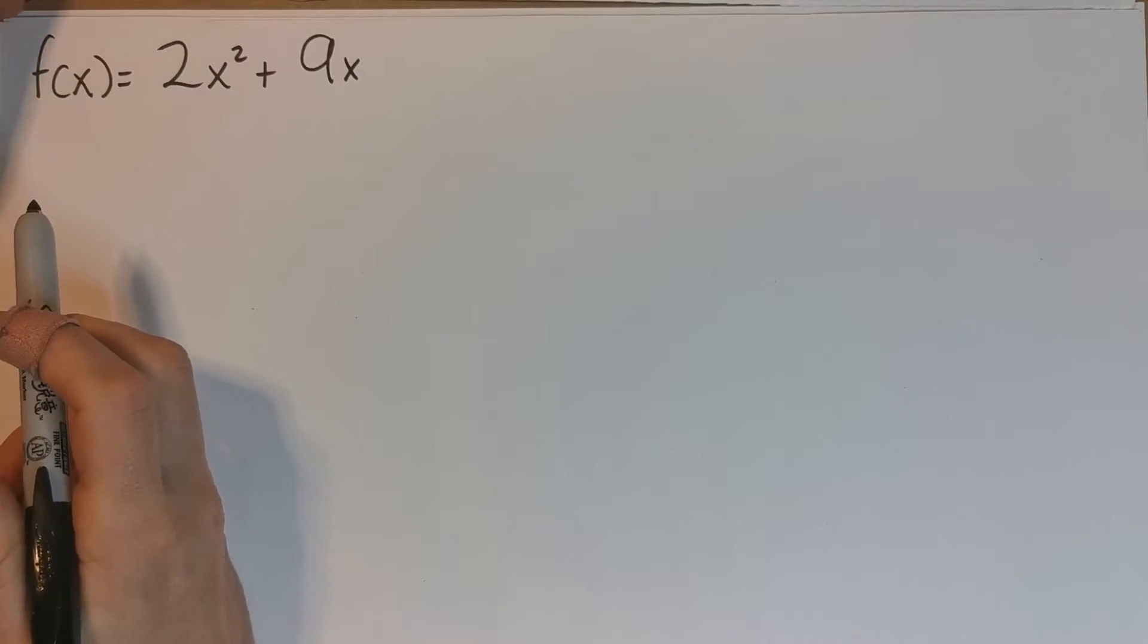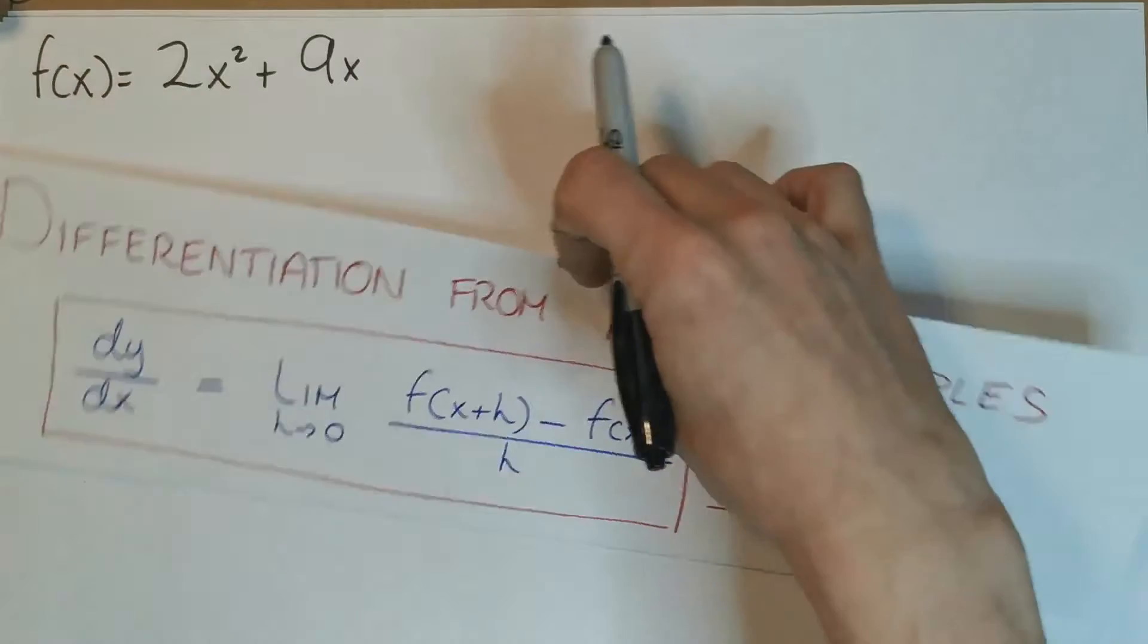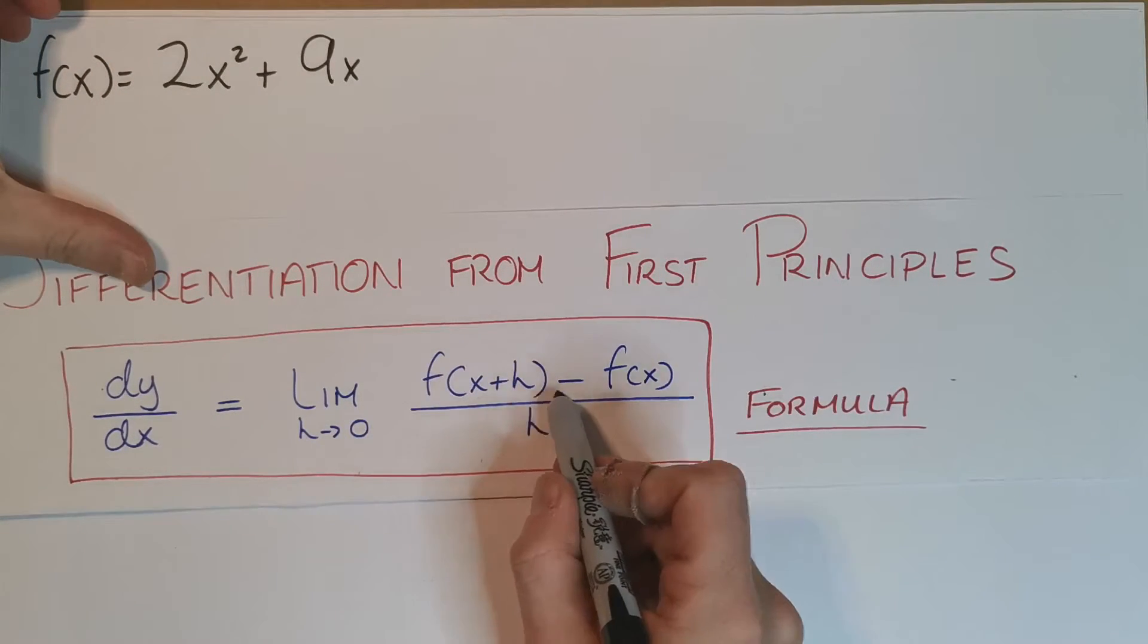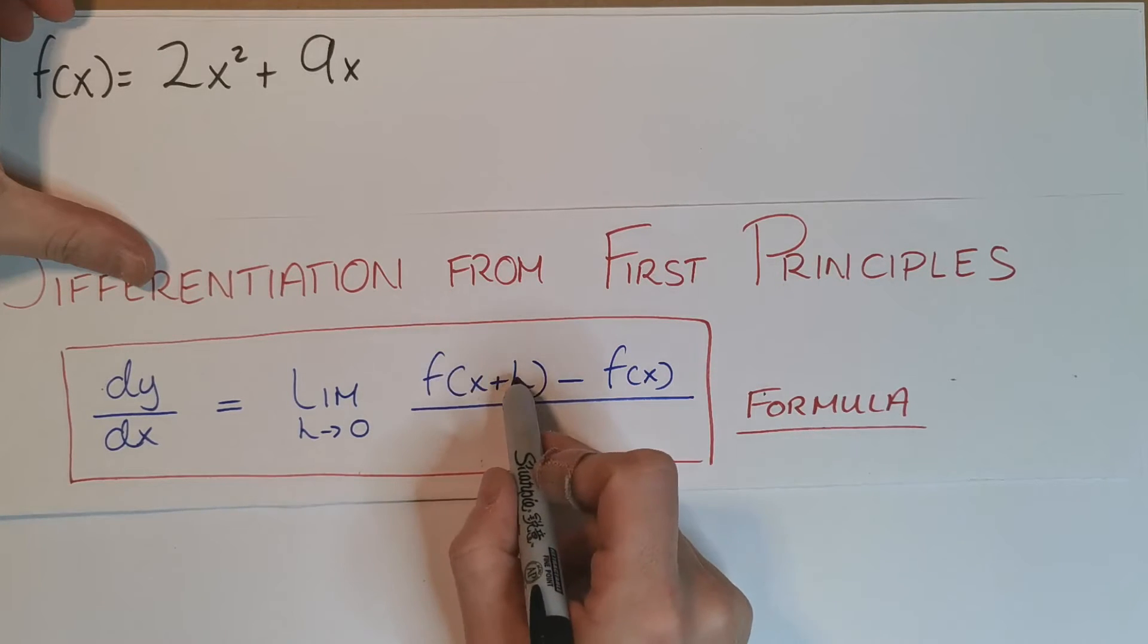So we actually have to use this formula. What do we actually need for this? Well, for this formula it's the limit as h goes to zero of f(x+h) minus f(x). We have f(x), we don't have f(x+h), so we have to put h into the formula.